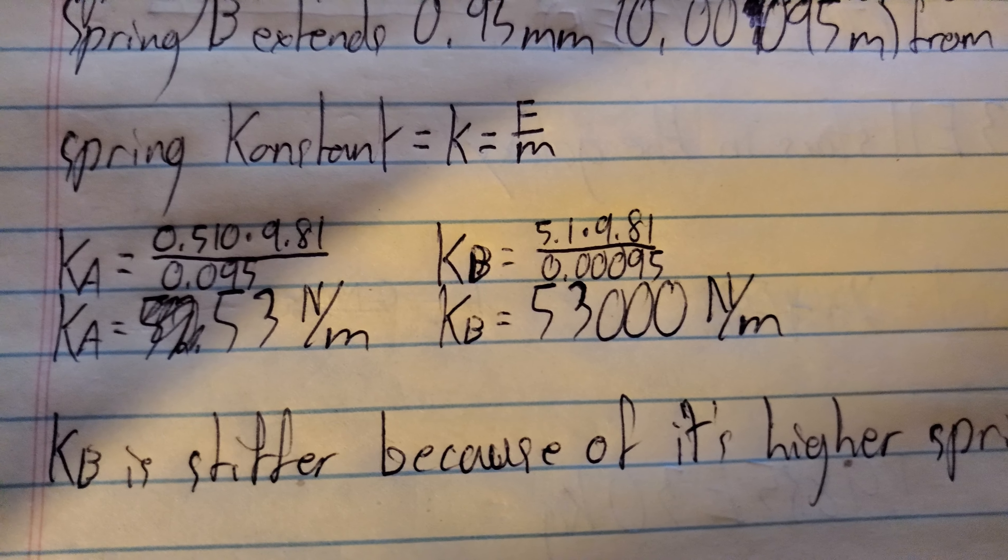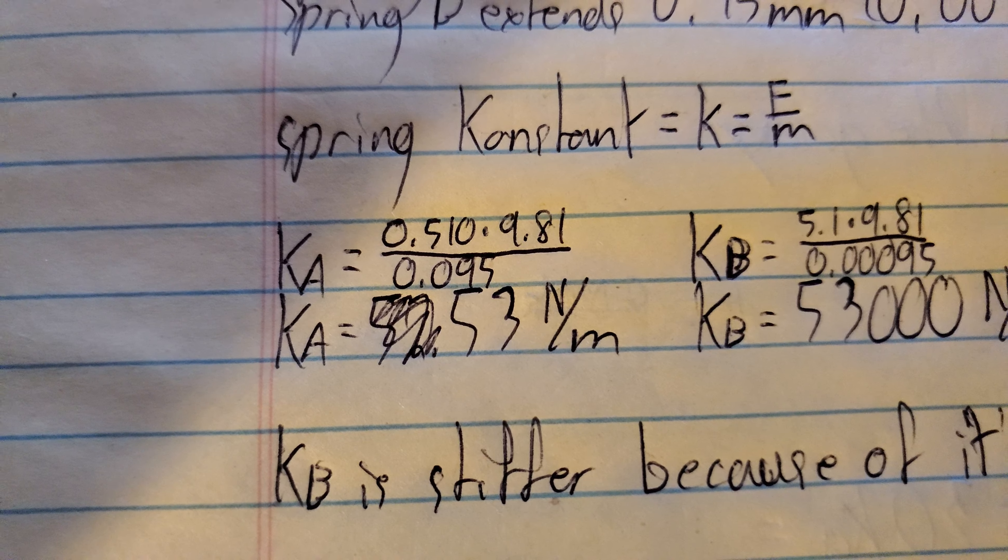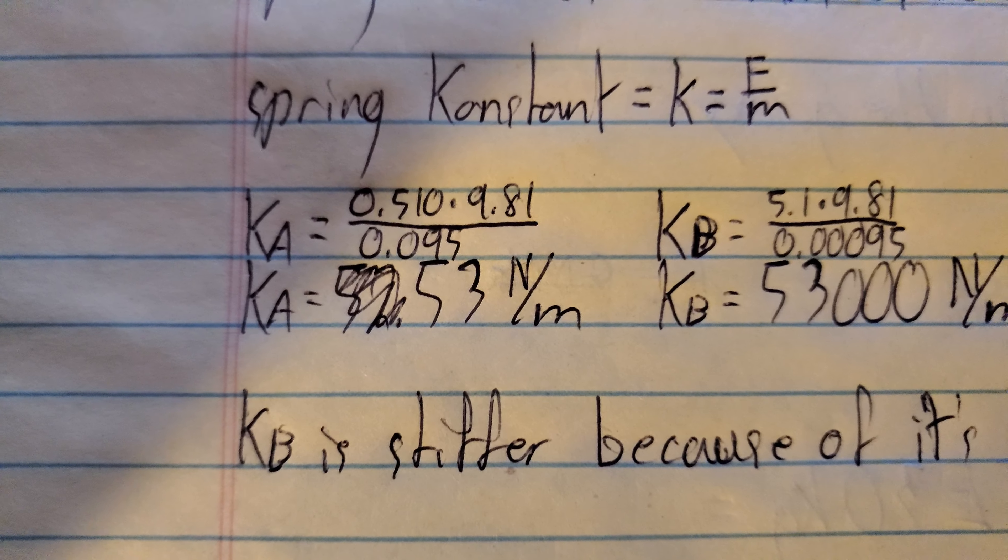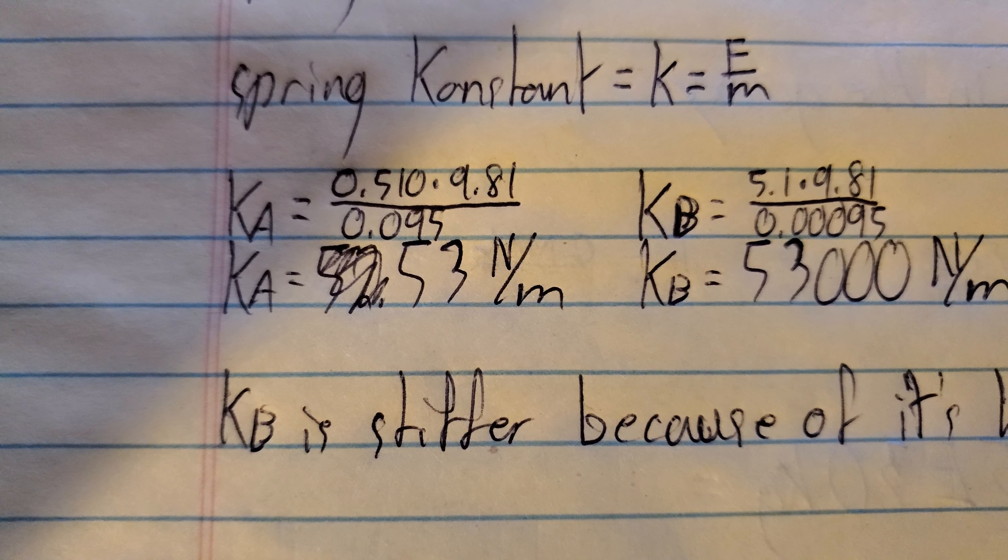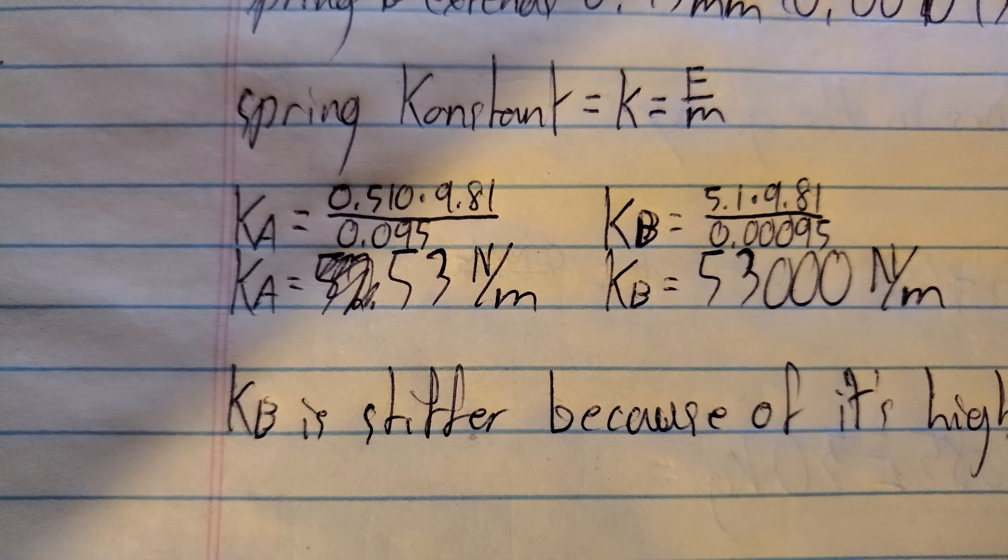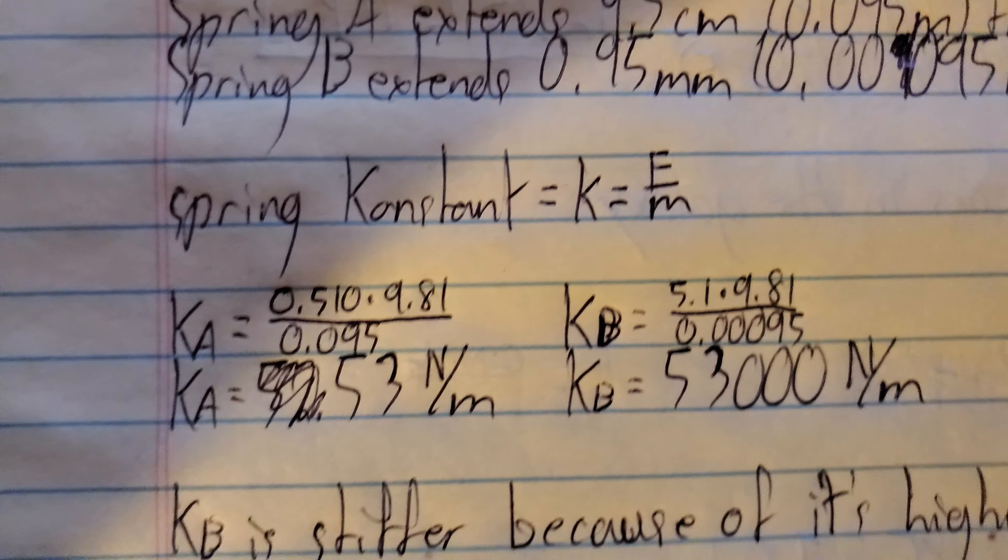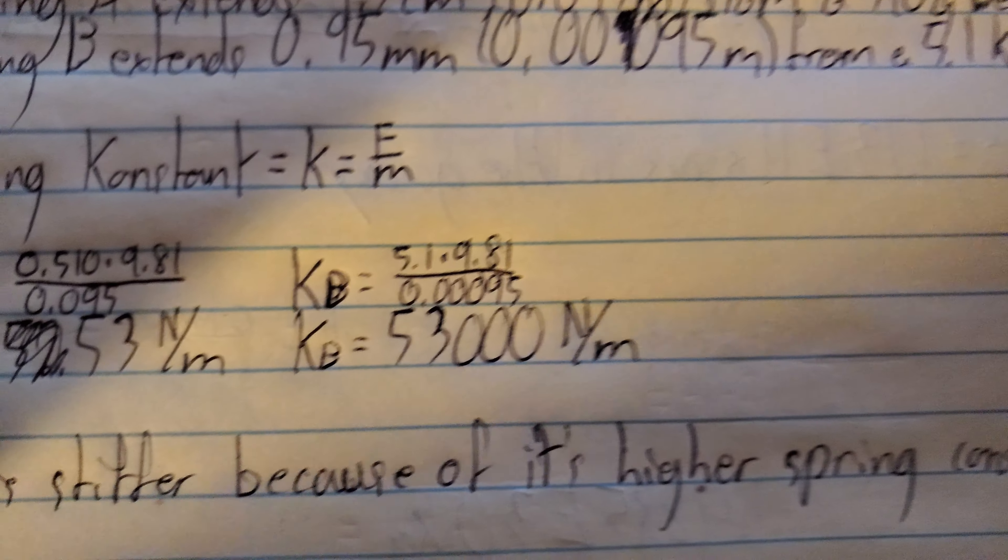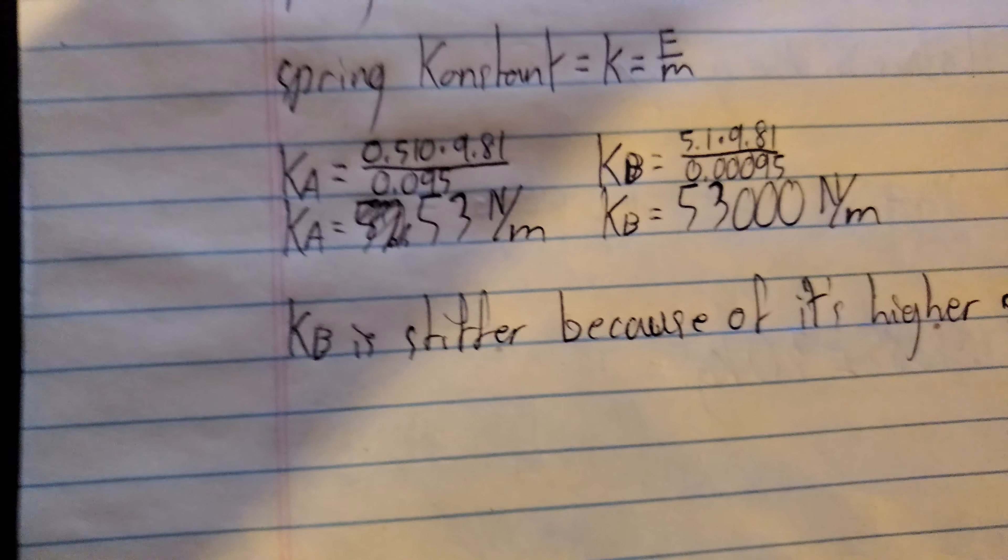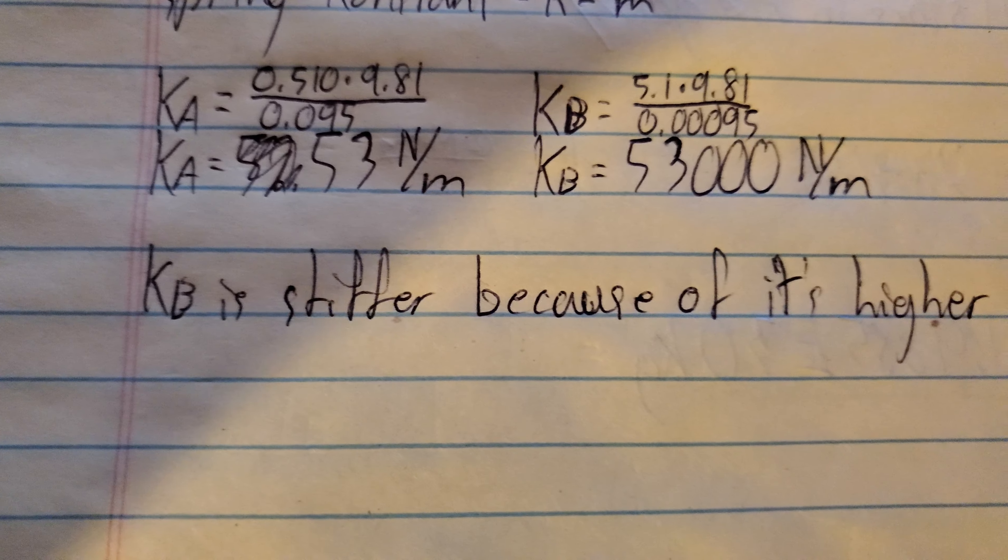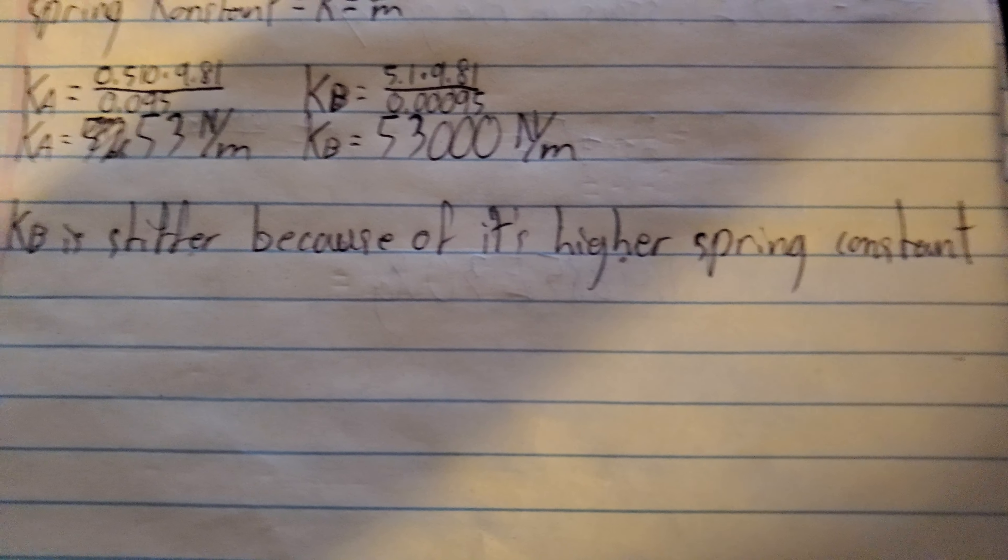And rounding to two significant figures, we get K A is 53 newtons per meter. Now spring constants are always newtons per meter. If you memorize that unit there, that will help you to remember what the relationship is for the spring constant. It's always newtons per meter, and K sub B is about 53,000 newtons per meter. So we can see here that K sub B is significantly stiffer than K sub A because of its higher spring constant.